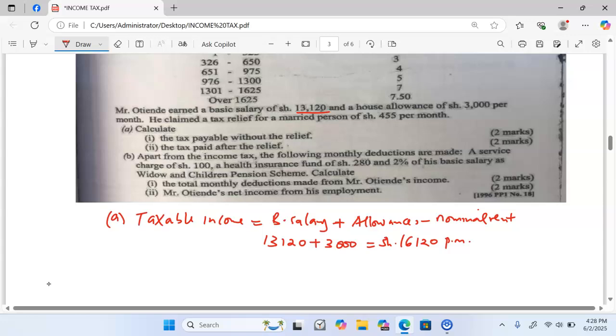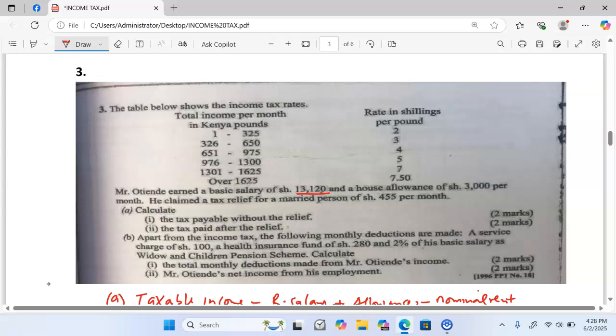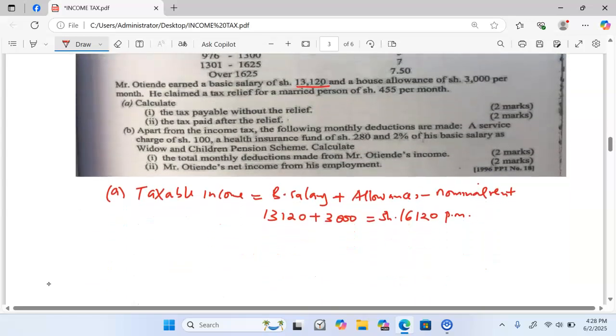We now move to the table. Before we start taxing, the table is in Kenyan Pounds per month. And therefore, whatever we have here, we change it into Kenyan Pounds.